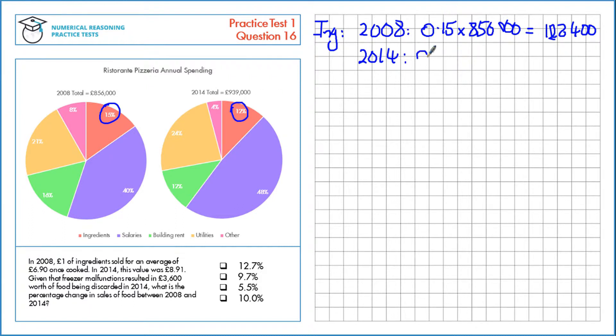In 2014, it's 12%, that's 0.12 times the total of £939,000, which gives us £112,680.